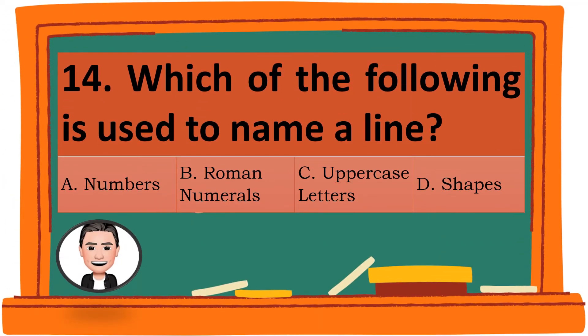Question 14. Which of the following is used to name a line? A. Numbers. B. Roman numerals. C. Uppercase letters. D. Shapes. The correct answer is A. Numbers.